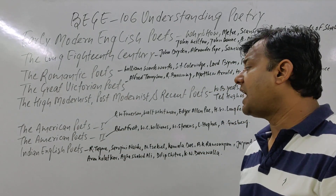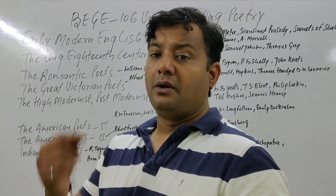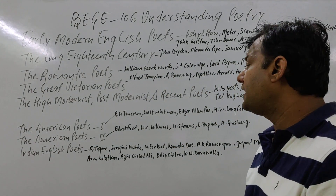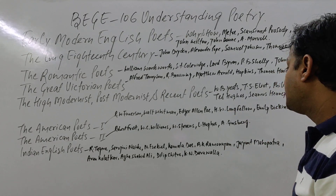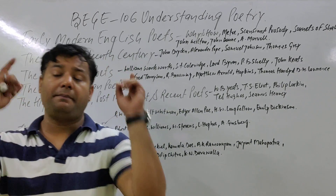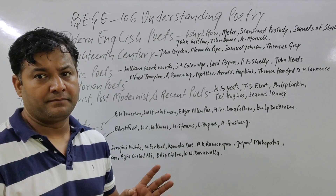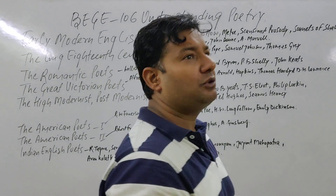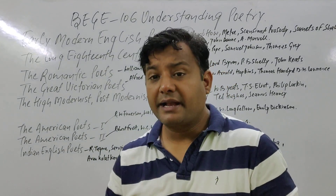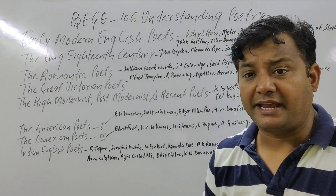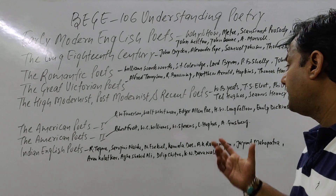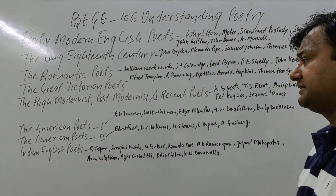Then jump to the next phase: the American Poets. American Poets are divided into two parts. American Poets Part 1 includes R.W. Emerson, Walt Whitman, Edgar Allan Poe, H.W. Longfellow, and Dickinson. These are all key figures whose work we need to study.